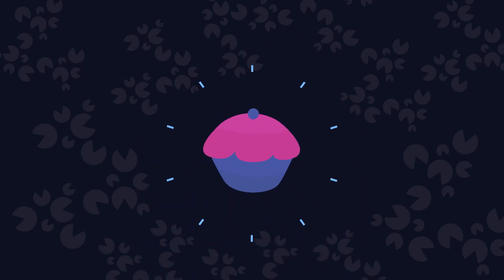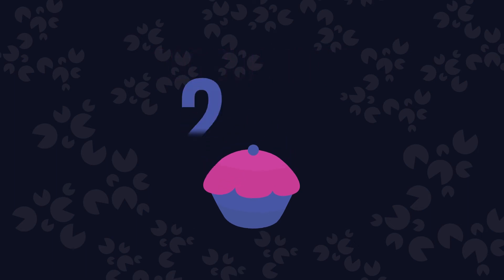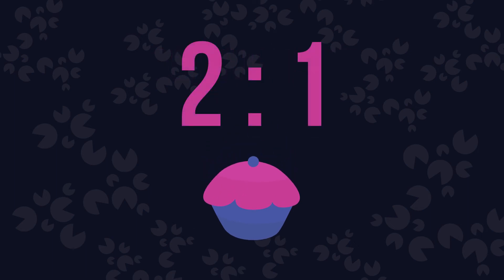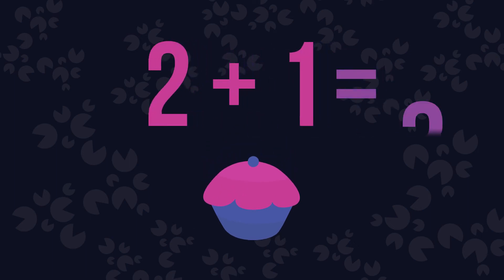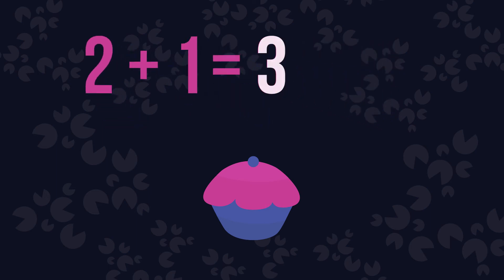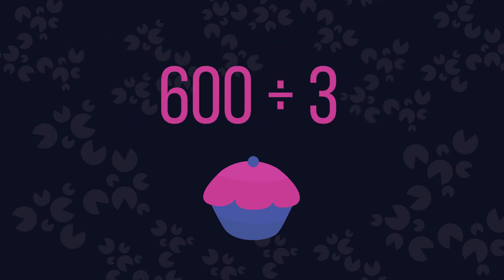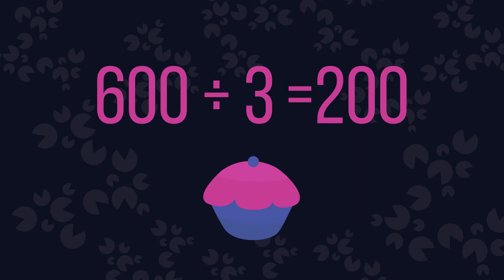For example, if you instead wish to share 600 cupcakes with your friend in the same ratio of two to one, we would add together the ratio parts, giving a value of three. We would then divide 600 by three, giving an answer of 200.